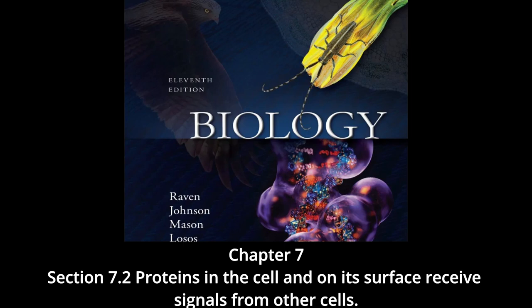This G protein activation is short-lived because GTP has a relatively short lifespan — seconds to minutes. For a pathway to stay active, there must be a continuous source of incoming extracellular signals; when external signal drops off, the pathway shuts down. Scientists have identified more than 100 different G-protein linked receptors — more than any other kind — mediating an incredible range of signals including peptide hormones, neurotransmitters, fatty acids, and amino acids. Despite this variation, all known G-protein linked receptors share a similar structure: each is a seven-pass transmembrane protein, threading back and forth across the lipid bilayer seven times.